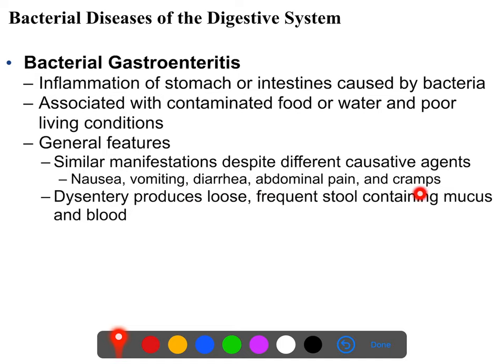They usually cause nausea, vomiting, diarrhea, abdominal pain, and cramps. The diarrhea may or may not contain blood, and it is usually loose, frequent stool with lots of mucus. Very severe cases of gastroenteritis-associated diarrhea are called dysenteries, which are usually a bit more severe than your standard stomach bug.